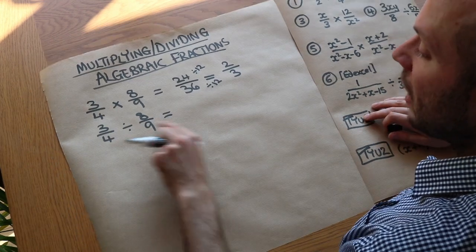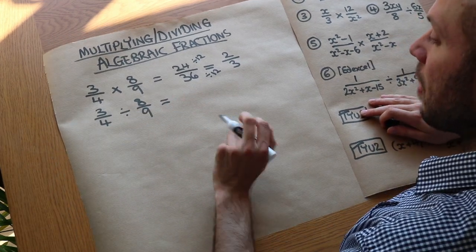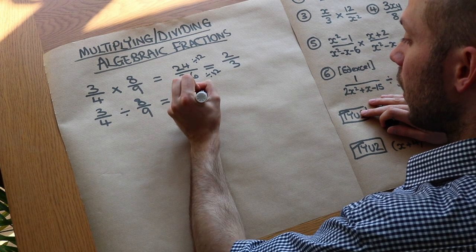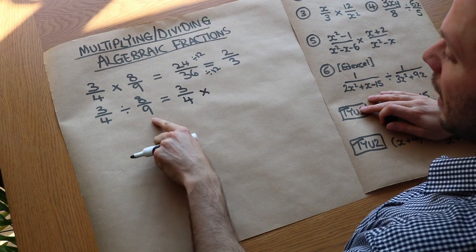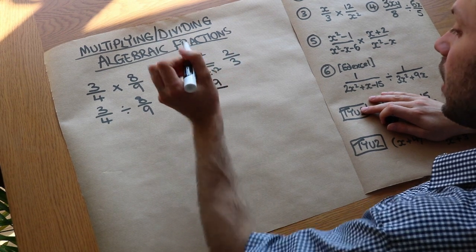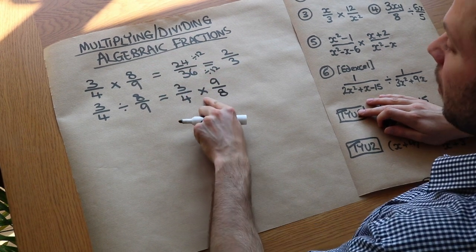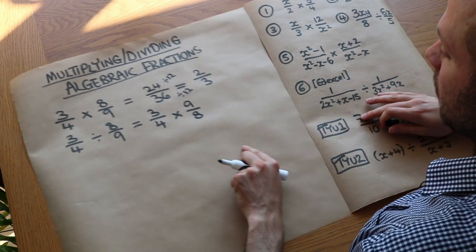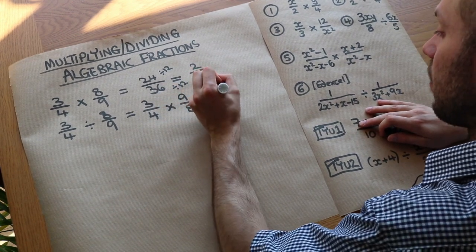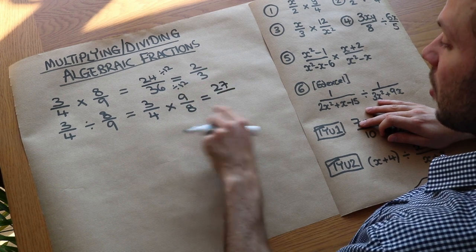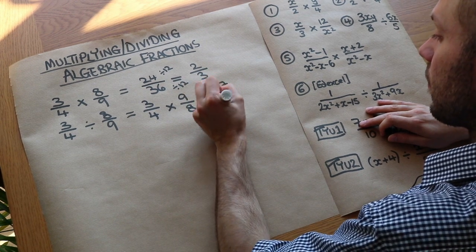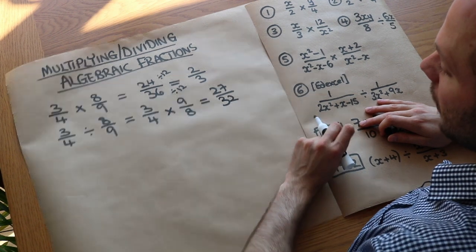When we divide by a fraction, remember that we instead multiply by the reciprocal of the second fraction — you flip the second fraction. So it's going to be 9 over 8, and we multiply instead of dividing. So 3 times 9 is 27, and 4 times 8 is 32, and we can't simplify that at all.